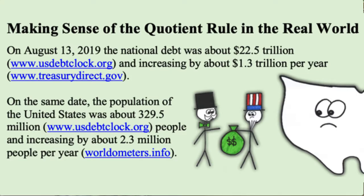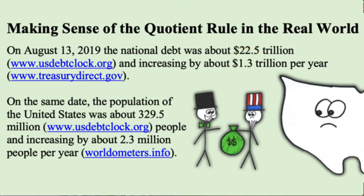And that real world context is this. Back on August 13th of 2019, the national debt was about $22.5 trillion dollars, and that national debt was increasing by about $1.3 trillion every year. On that same date, August 13th, 2019, the population of the United States was about 329.5 million people, and that population was increasing by about 2.3 million people per year.